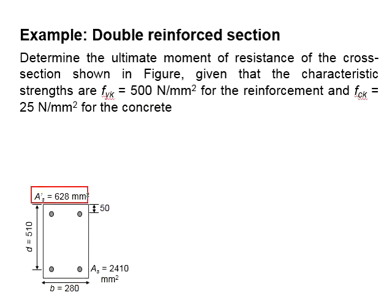The compression steel bar is given as 628 mm squared and the tension steel bar is given as 2410 mm squared. The position of the compressive steel bar is determined as 50 mm from the top of the beam.